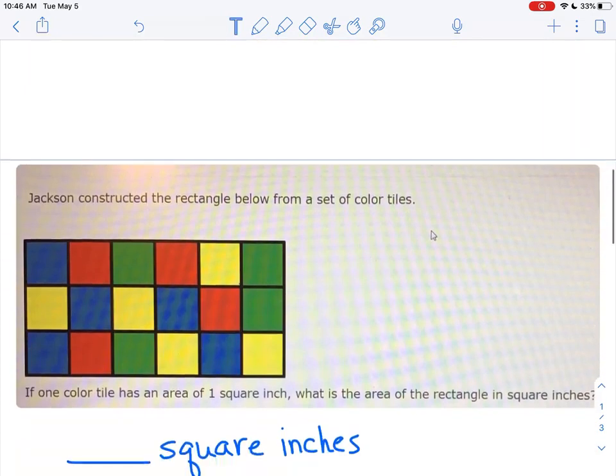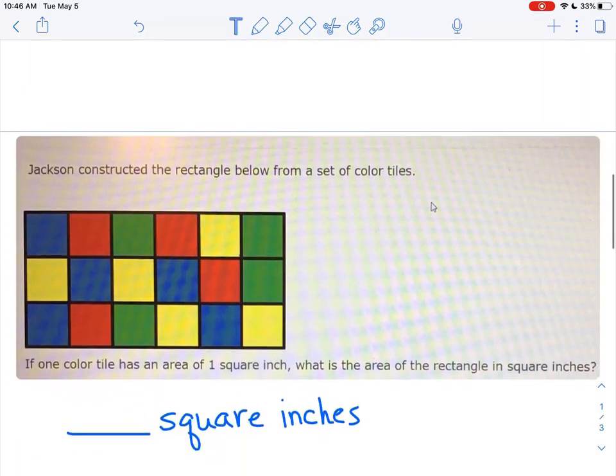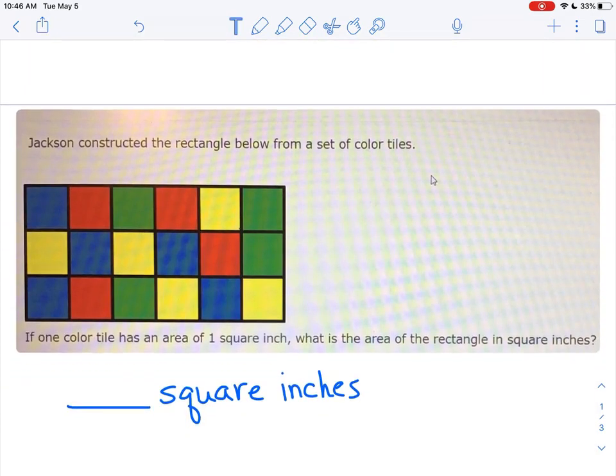All right. I have one down here for us. It says Jackson constructed the rectangle below from a set of color tiles. If one color tile has an area of one square inch, what is the area of the rectangle in square inches? Now remember, area is what? The inside space of an object. So how are we going to decide how many square inches are in this rectangle that Jackson made? We're going to count them. Good. Are you ready?